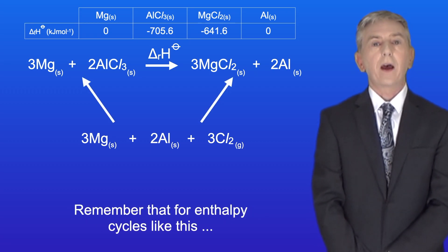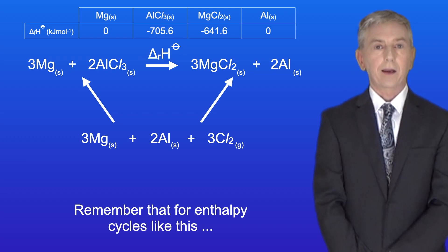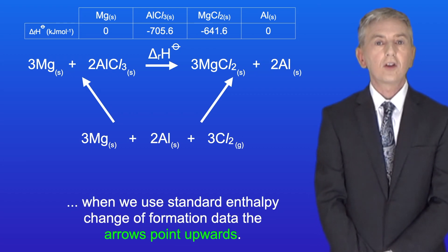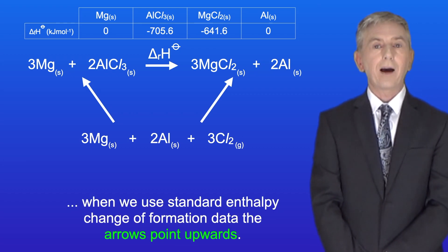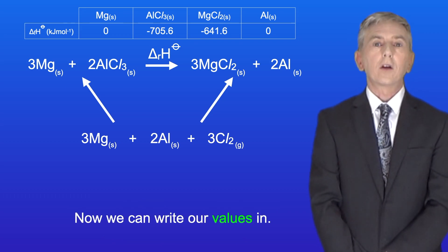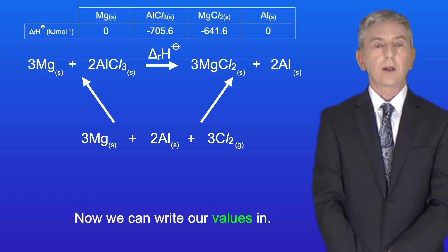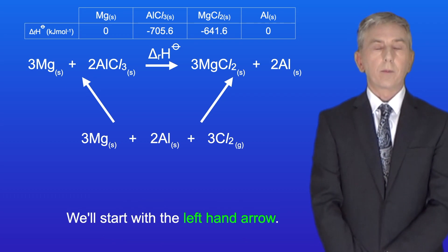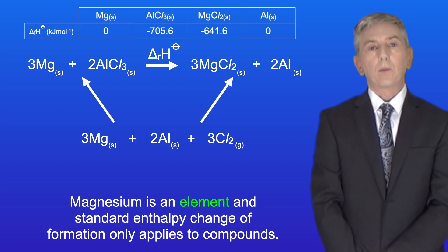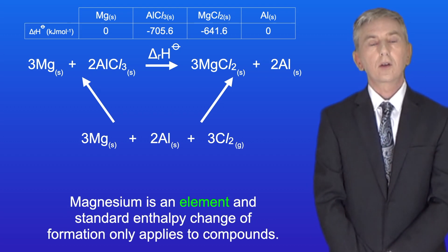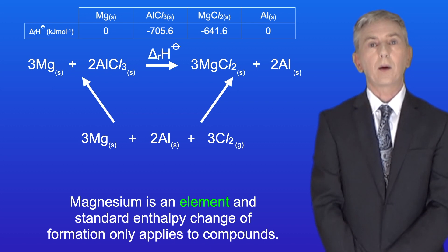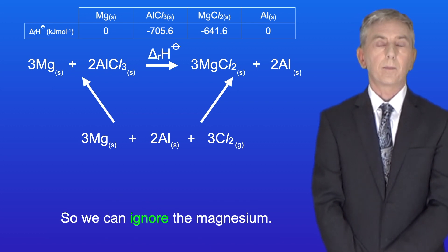Now remember that for enthalpy cycles like this, when we use standard enthalpy change of formation data, the arrows point upwards. Now we can write our values in. We'll start with the left-hand arrow. Magnesium is an element and standard enthalpy change of formation only applies to compounds, so we can ignore the magnesium.